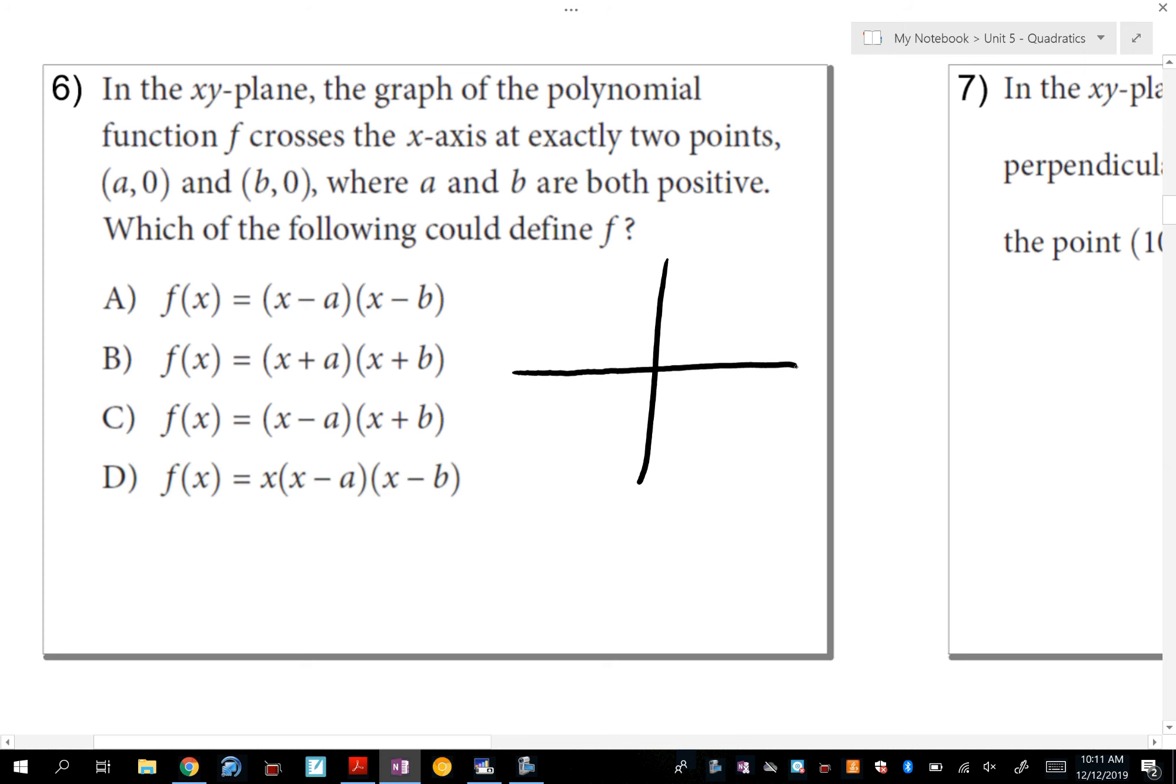Now, when I look at the answer choices that could possibly define this function f, all of them are in root form. So because they're in root form, I'm going to look to see what are the roots of this function, and it says that they're a, 0, and b, 0. Now, if this is a little confusing without numbers, it does say a and b are both positive, so if you wanted to say, okay, I'm going to make a 2 and b 4, because those are positive numbers, go for it. So that means at 2, 0, and 4, 0, you're going to have your x-intercepts. There's only two of them, so that means it is going to be a quadratic, a parabola.